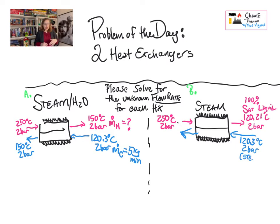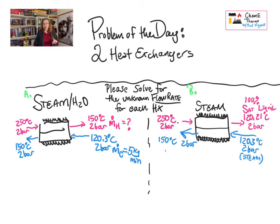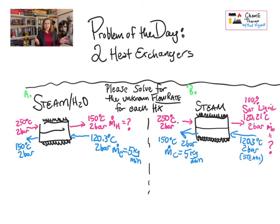On the cold side we have the exact same conditions: 120.3°C coming in at 2 bar — remember that's 100% steam — then exiting at 150°C and 2 bar. Solve this energy balance and let me know what fluid flow rate you get for the hot side for both case A and case B. Now that you've worked out or at least set up the energy balances for those two heat exchangers, I want you to do something else: complete an entropy balance.